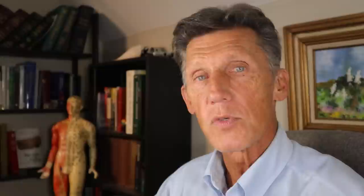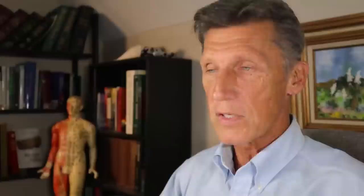Gouty affections become active in spring and autumn — there's a seasonality to gout. Why in spring? That's largely a vitamin C deficiency. Back at 400 BC, the last vitamin C they'd had was from fruits in season; fruits only last so long before they rot, and vitamin C is protective and helps you excrete uric acid. What about autumn? That's the obvious one — you're eating all the harvested grains with high omega-6s, and all those fruits give you high fructose and omega-6. You're getting fat for winter, but you're also becoming very gout-prone.